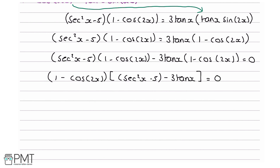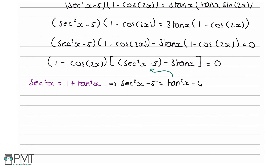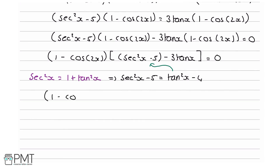Now I'm going to use the identity sec²x equals 1 plus tan²x. This means sec²x minus 5 equals tan²x plus 1 minus 5, which is tan²x minus 4. Substituting this in, we get (1 minus cos2x)(tan²x minus 4 minus 3 tanx) equals 0. We now have two products equalling zero: either 1 minus cos2x equals 0, or tan²x minus 4 minus 3 tanx equals 0.